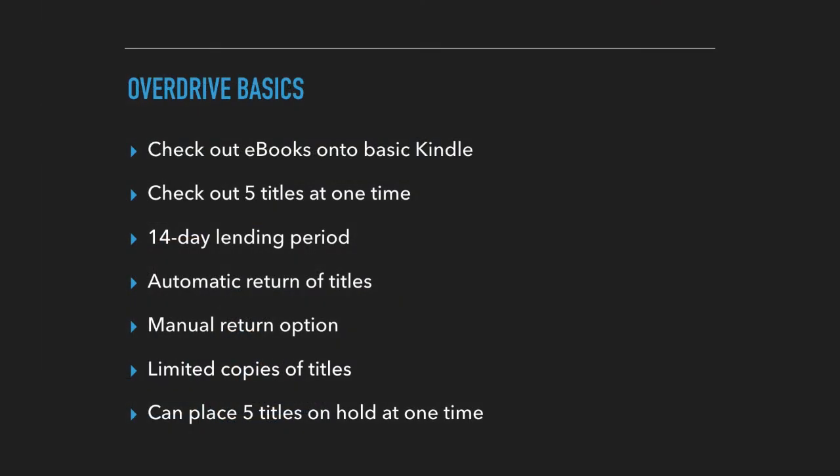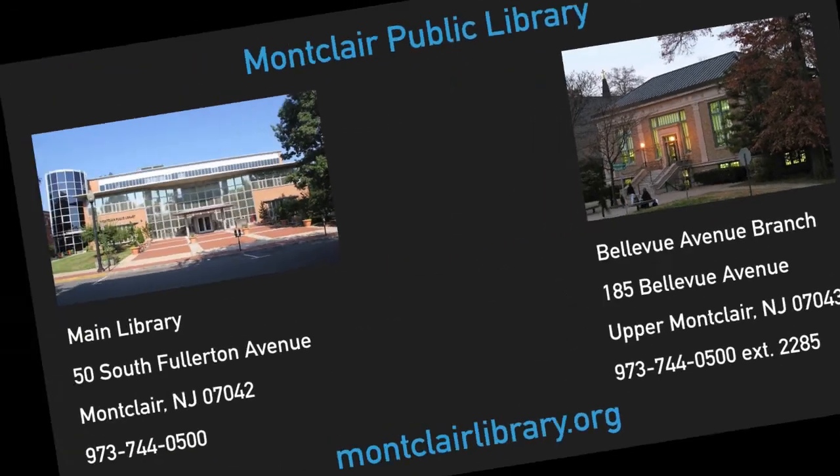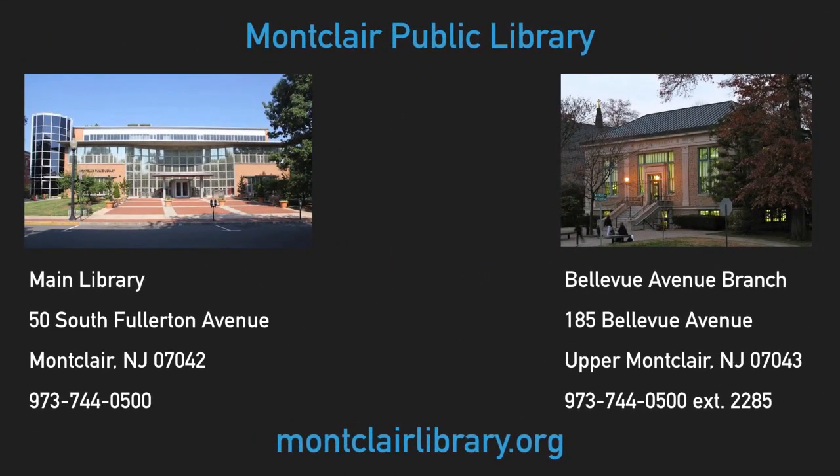So let's review the basics. You can check out eBooks onto your basic Kindle. You can check out five titles at one time. There's a 14-day lending period. Automatic returns of titles, and there's also a manual return option as well. There are limited copies of titles, meaning you may need to put some of them on hold. You can place five titles on hold at one time. If you need any help using our eLibrary services, please do not hesitate to get in touch.